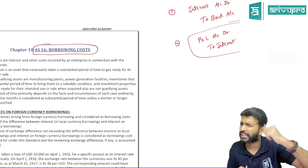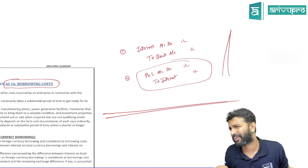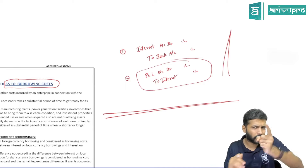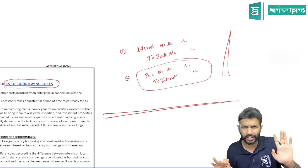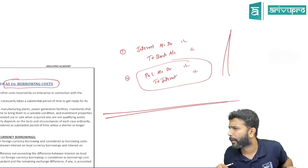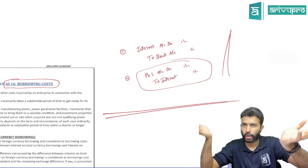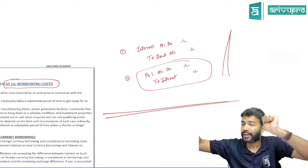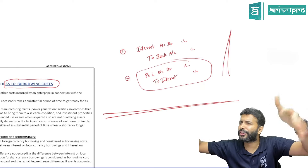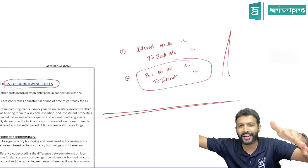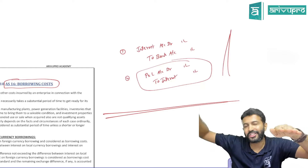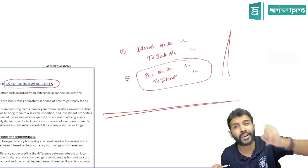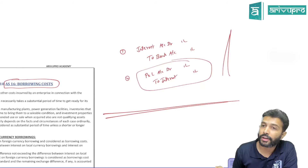Think logically also — you took a loan to construct a building. Is the building already ready for use? No. Matching concept says expense and income should be matched. You are paying interest on this loan, but the building is not ready for use yet. You are booking an expense but cannot take the benefit. Hence during this period, don't transfer interest to P&L — rather add it to the cost of the building itself, because this loan is necessary for the construction.